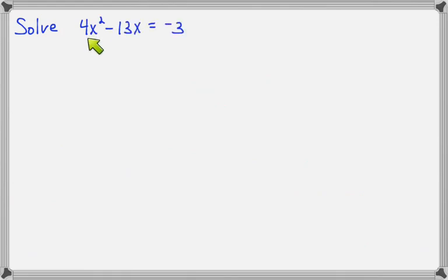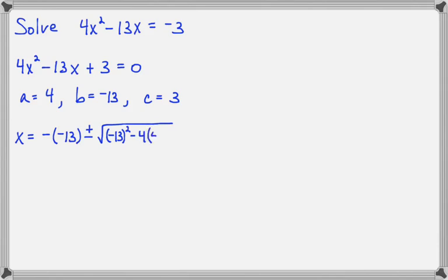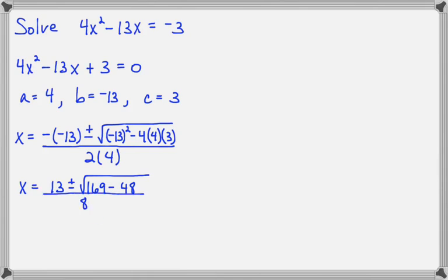Now let's solve this one together: 4x squared minus 13x equals negative 3. If we move negative 3 to the left side, we'll have 4x squared minus 13x plus 3 equals 0. It's important to get the 0 over here before we start naming a, b, and c. So a is 4, b is negative 13, and c is 3. Plugging straight into the formula — negative b plus or minus the square root of b squared minus 4ac all over 2a — negative negative 13 makes positive 13. Under the radical, negative 13 squared makes positive 169. 4 times 4 makes 16, and 16 times 3 makes 48. In the denominator, 2 times 4 is 8.